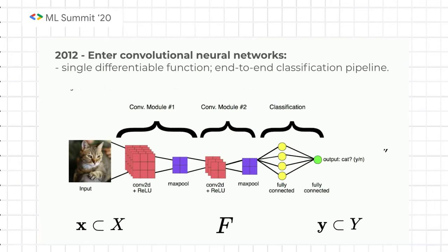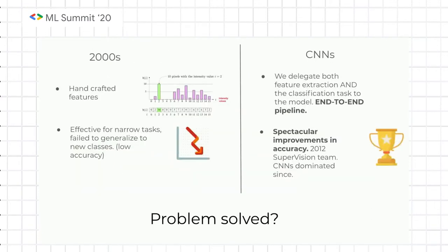Convolutional neural networks were exciting because what they're very good at is extracting features — we delegate feature representation to the model itself. In many ways, all we say is this is an input space and this is an output space, these are true labels. But the model decides what features to extract through a feedback loop driven by backpropagation — stochastic gradient updates. And what we gained was accuracy. We finally had a pivotal breakthrough in terms of test accuracy. But what we gave up was interpretability.